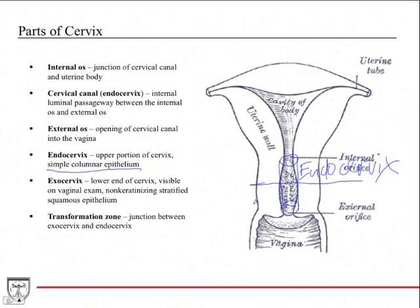The exocervix is the lower portion of the cervix. This is what's visible on vaginal exam — when you do a speculum exam and examine the cervix, this is the area you see. The luminal surface of the exocervix is non-keratinized stratified squamous epithelium, which is the same epithelium that covers the vagina. It's continuous with the vagina, so it has the same epithelium.